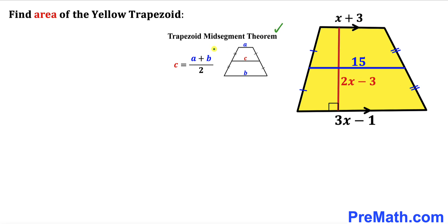Let's recall the trapezoid mid segment theorem. If we have these A and B the bases of this trapezoid and C as the mid segment, then this mid segment C could be written as A plus B divided by 2.